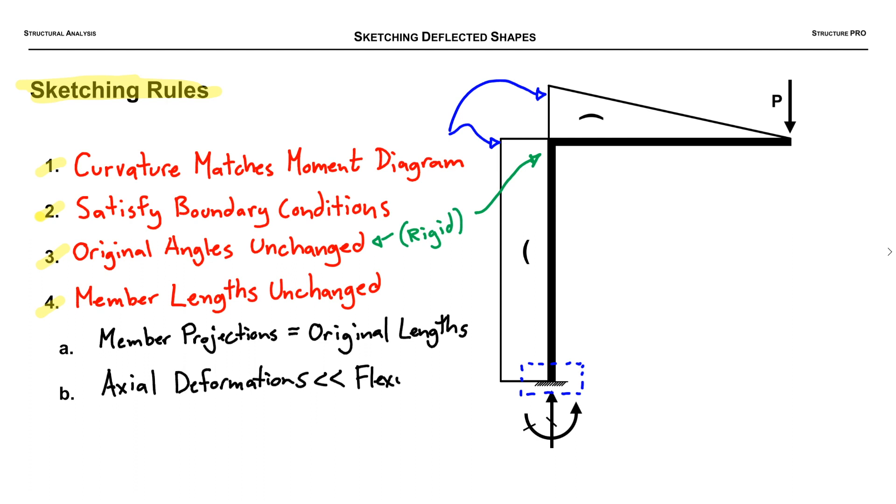So the key here is that the axial deformations occurring in these members are very small compared to the flexural deformations. In other words the change in length is negligible compared to the change in curvature.